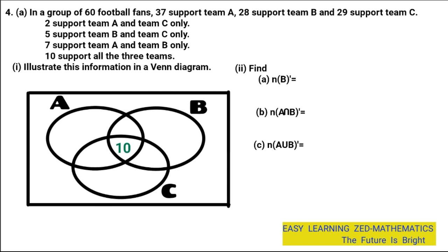Once the center is done, fill in the remaining intersections. 2 supporters support team A and C only, so write 2 at the intersection of A and C. 5 supporters support team B and C only, so write 5 at intersection B and C. 7 supporters support team A and B only, so write 7 at intersection A and B only.